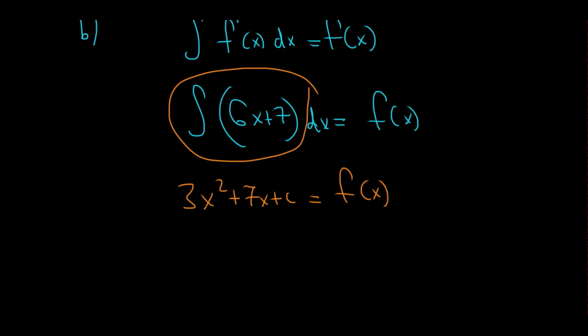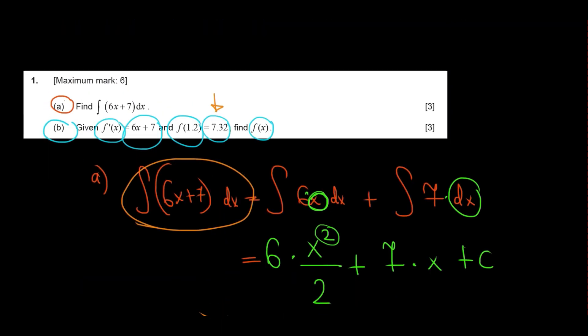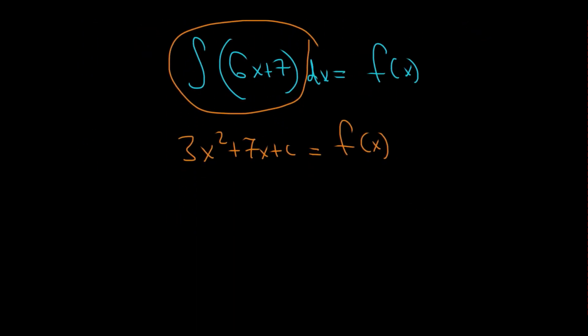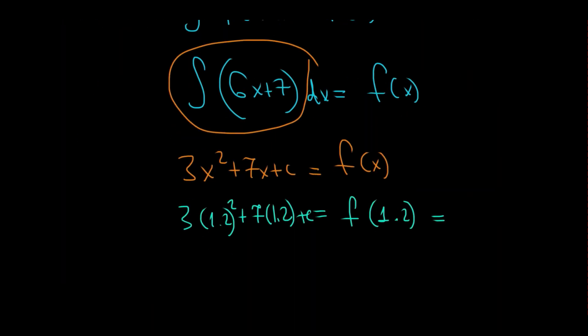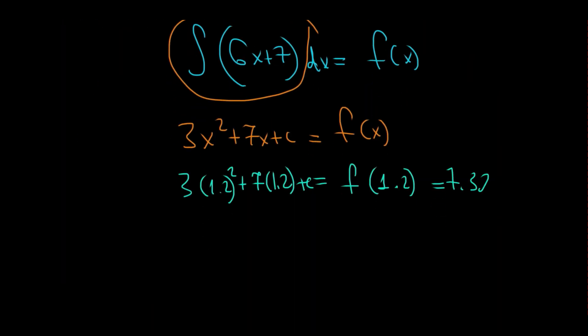And now, because I have one piece of information, which is f of 1.2, I'm going to substitute it. I'm going to do f of 1.2 equals to 3 times 1.2 squared plus 7 times 1.2 plus c. And all of this is equal to the outcome value, which is 7.32.